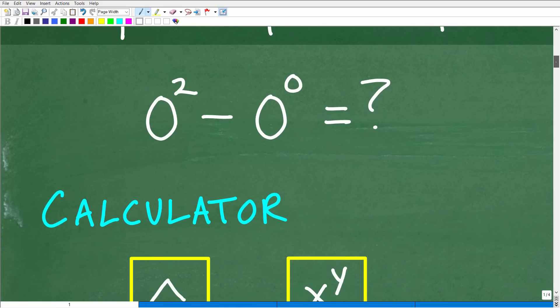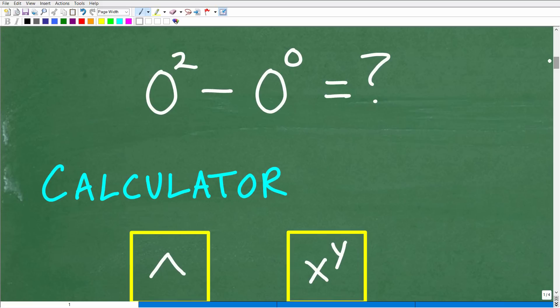Okay, so let's go ahead and get into this here. So here's the problem. 0 squared minus 0 to the 0 power. So this part right here is probably pretty easy for most of you. 0 squared means what? Well, it means 0 times 0. So 0 times 0 is just going to be 0. So if you got that correct, you know, most of you should have gotten that correct.